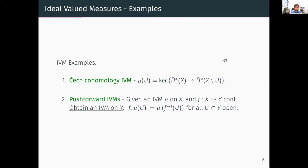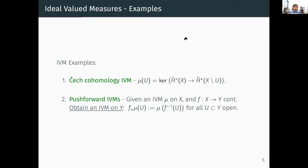Another way to generate examples is the push-forward construction. Given a space X with an IVM and any continuous map f to another space Y, one obtains an IVM on Y by assigning to each open set in Y the measure of its pre-image under f.